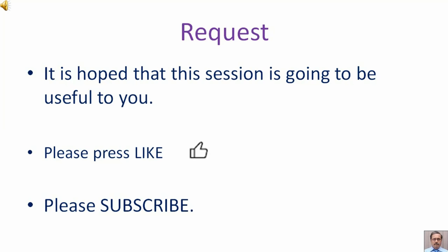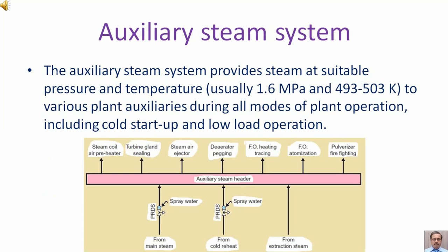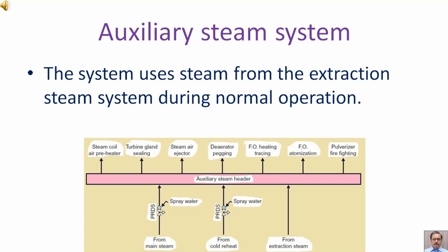The auxiliary steam system provides steam at suitable pressure and temperature to various plant auxiliaries during all modes of plant operation, including cold start-up and low load operation. The auxiliary steam pressure is usually 1.6 mega Pascal and temperature is between 493 to 503 degree Kelvin.